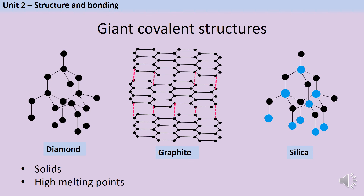Finally, you need to know about giant covalent structures. Whereas a small molecular substance contains just a few atoms bonded together, a giant covalent structure may contain thousands or even millions of atoms all joined together by strong covalent bonds. Three examples are diamond, graphite, and silica, which get their own videos later on. All of these are solids with high melting points, because in order to melt these substances you would need to give enough energy to overcome all of the thousands of strong covalent bonds.